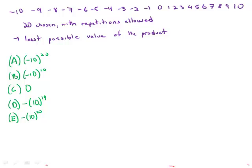From the consecutive integers negative 10 to 10 inclusive, 20 integers are randomly chosen with repetitions allowed. What is the least possible value of the product of the 20 integers?